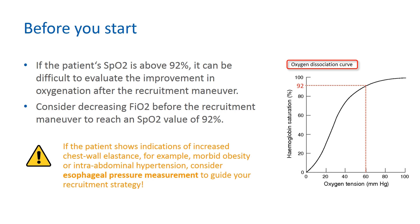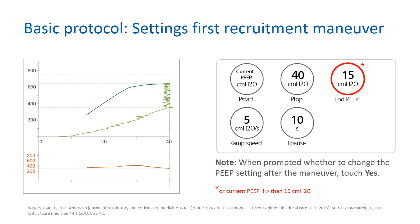If the patient shows indications of increased chest wall elastance — for example morbid obesity or intra-abdominal hypertension — consider esophageal manometry to guide your recruitment strategy. Perform the maneuver by setting the P-start at the patient's current PEEP setting, a P-top of 40, then PEEP of 15, ramp speed of 5, and a T-pause of 10 seconds.